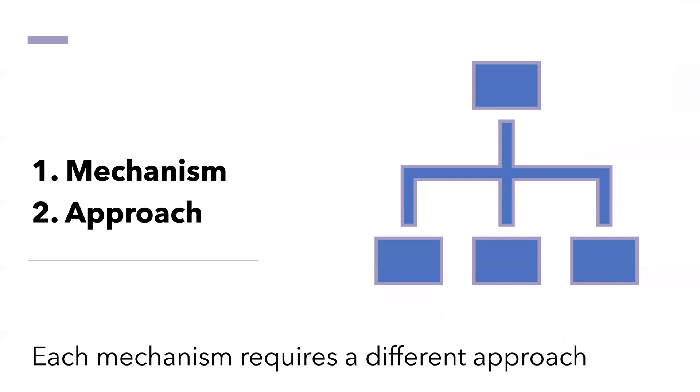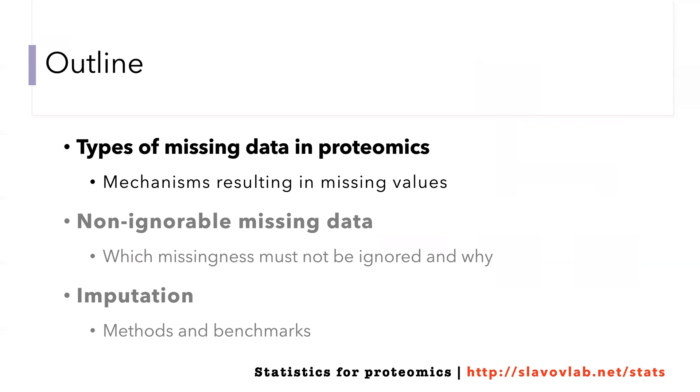The bottom line of this introduction is that the path of dealing with missing values should start by understanding them, asking what is the mechanism contributing to not having measured that protein in that sample. Once we understand the mechanism, that can inform the approach, because different mechanisms require different approaches. That will be the subject of further lectures, part of this sequel, with the next one focusing on non-ignorable data that are very important—specifically cases when missing values are not at random but are strongly dependent on specific properties of the peptides.